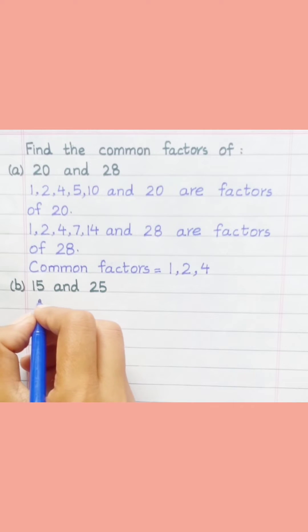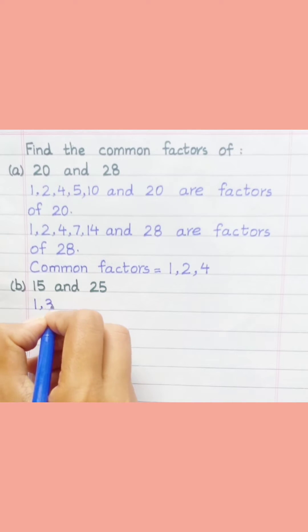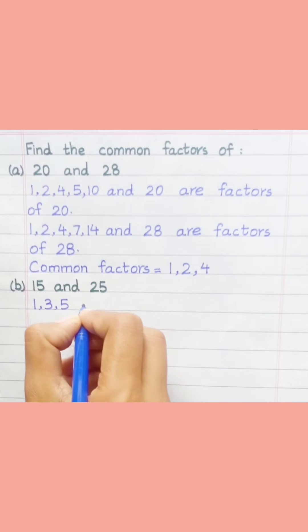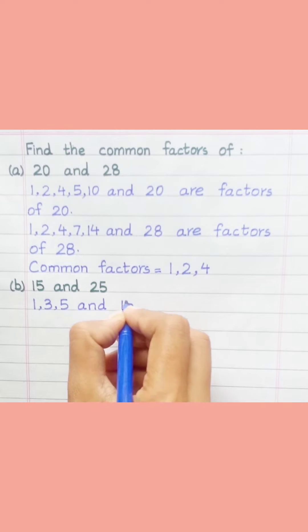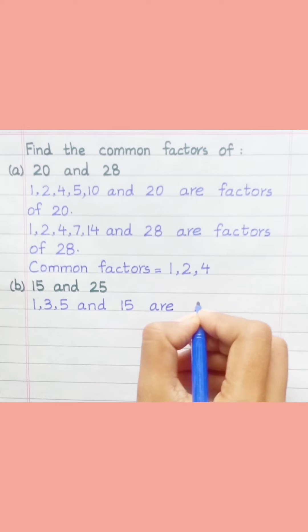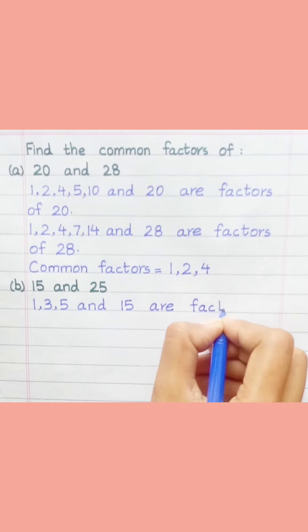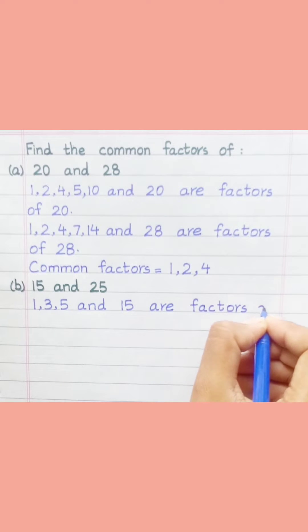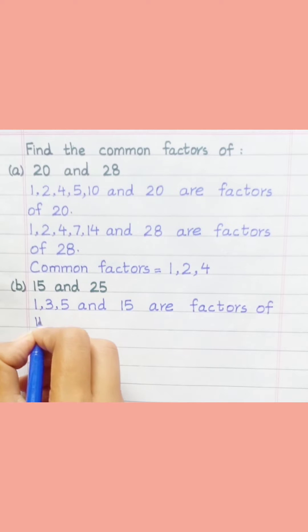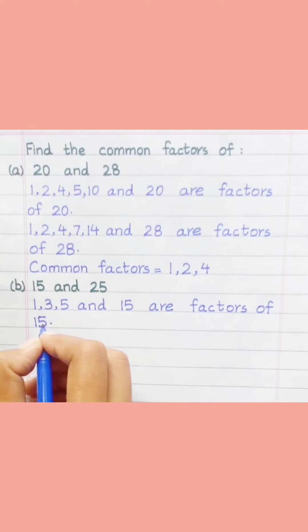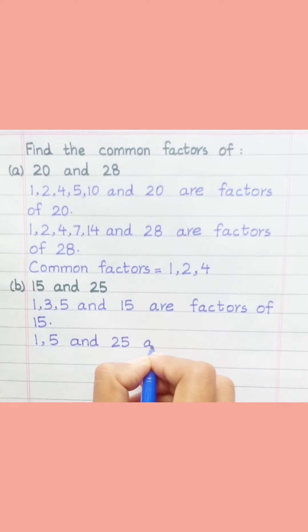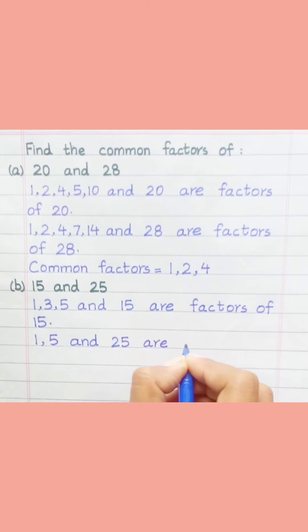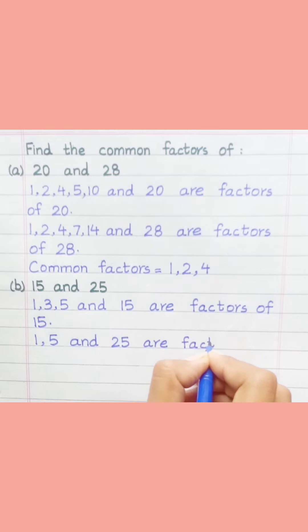Part B: 15 and 25. 1, 3, 5, and 15 are factors of 15. 1, 5, and 25 are factors of 25.